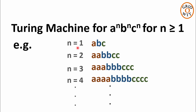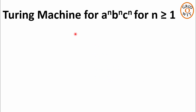For n equal to 2, the string is two a's followed by two b's followed by two c's. For n equal to 3, the string is three a's followed by three b's followed by three c's, and so on. We have such types of strings in this language and we have to design a Turing machine for accepting this language. First we will see how the Turing machine will decide when to accept and when to reject.